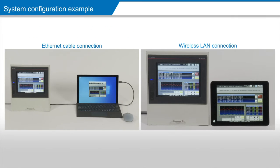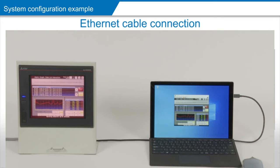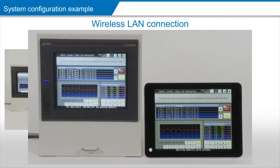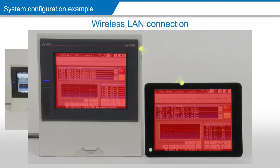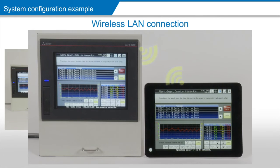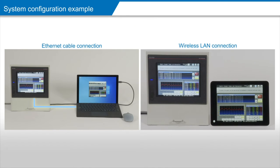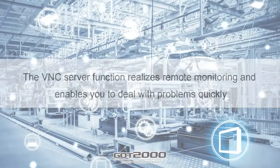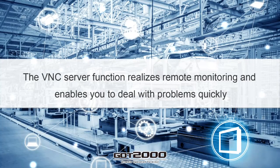These are the system configuration examples of the VNC server function. One is connecting the G.O.T. to the computer using an Ethernet cable. Another one is connecting the G.O.T. to the tablet via wireless LAN. The VNC server function enables you to check the G.O.T. located on site, while enabling easier troubleshooting from a remote location.